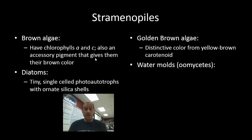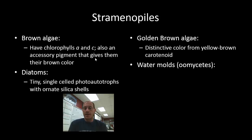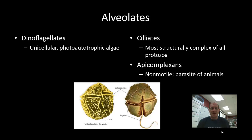The fourth member of the straminopiles is water molds, though this name is a little misleading since they are found both in water and on land. More frequently these are referred to as the oomycetes, which literally means egg fungus. Historically scientists classified these organisms as fungi, and while they have many similarities, they are not closely related — these similar features were developed through convergent evolution rather than having evolved from a common ancestor.